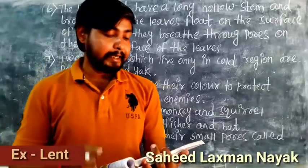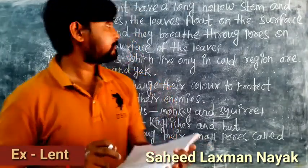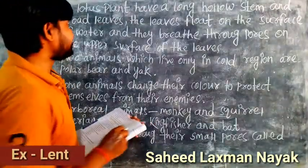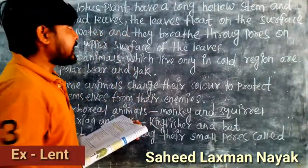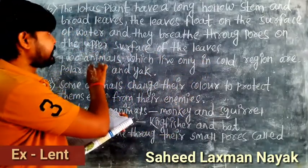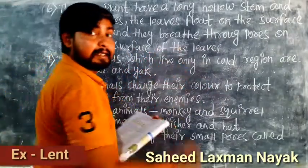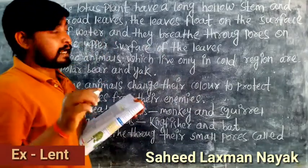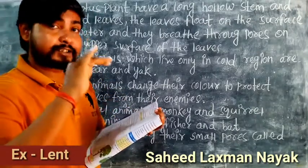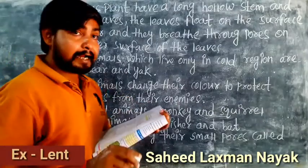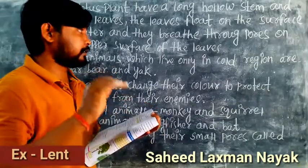Sixth question: a lotus plant grows in water — how does it adapt itself to live in water? The answer is: a lotus plant has a long hollow stem and broad leaves. The leaves float on the surface of the water and they breathe through pores on the upper surface of the leaves.